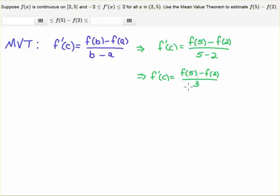Let's simplify that. 5 minus 2 is 3. We don't know what f(5) - f(2) is - that's what we're trying to estimate.